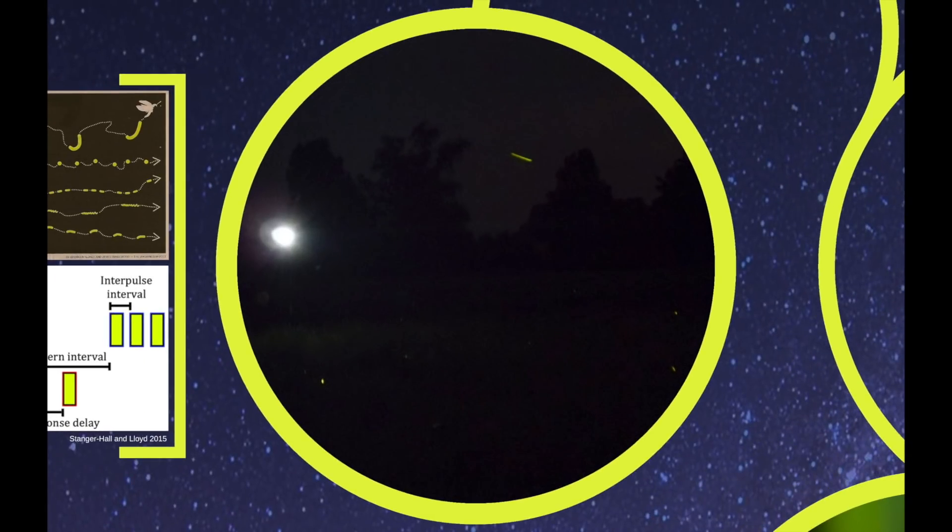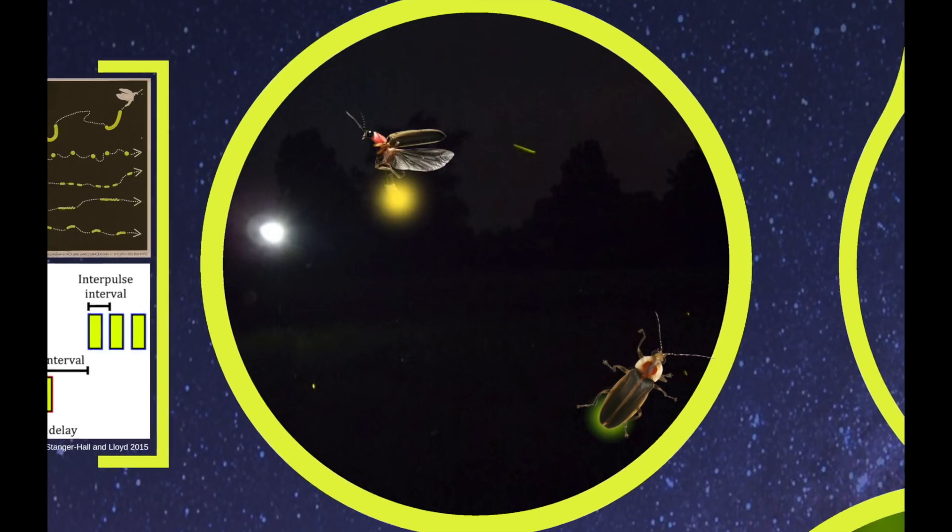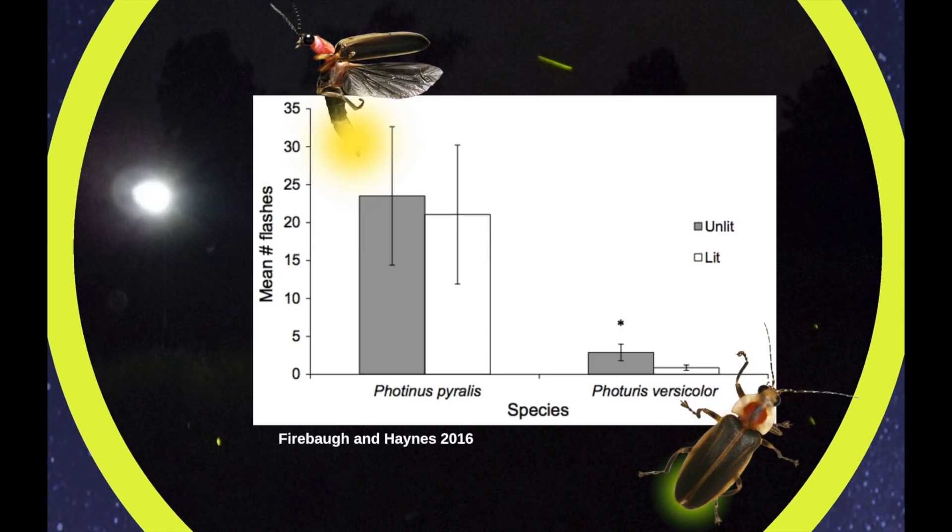Here's another study from Virginia looking at two species, one that comes out earlier in the evening and one that comes out later at night. The authors introduced light into the habitat of these two species and they found that the one that came out earlier didn't mind the added light all that much. Whereas the one that came out later when it's dark normally really did seem to care and didn't flash as much when the lights were around.